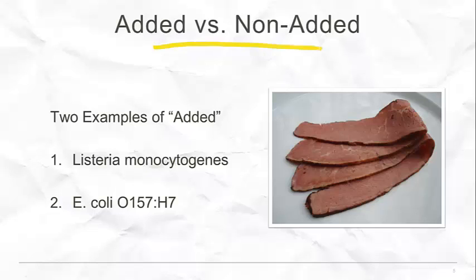Deli meats and a few other categories like that are RTEs — they don't require any additional processing for the consumer to buy and then consume. We buy deli meats, put them in our sandwich, and consume them. So it's important when talking about adulteration to understand what's going to be deemed adulteration on a ready-to-eat product versus a raw meat product. For raw meat products, the expectation is that the product will be cooked, and there's a responsibility for the consumer or restaurant to bring it to the appropriate temperature to kill pathogens that could be present.